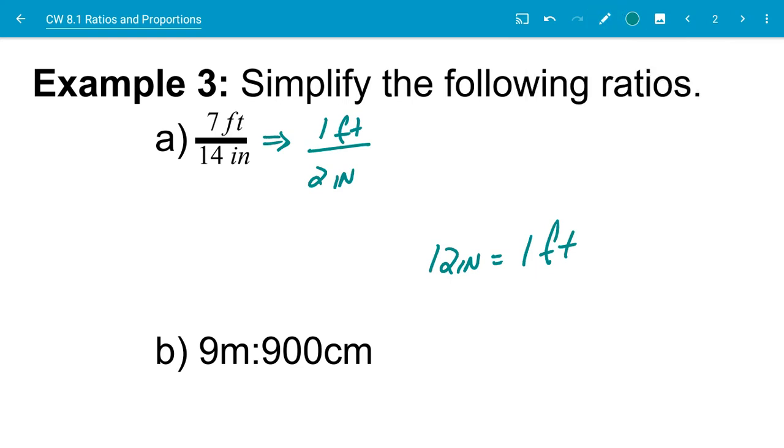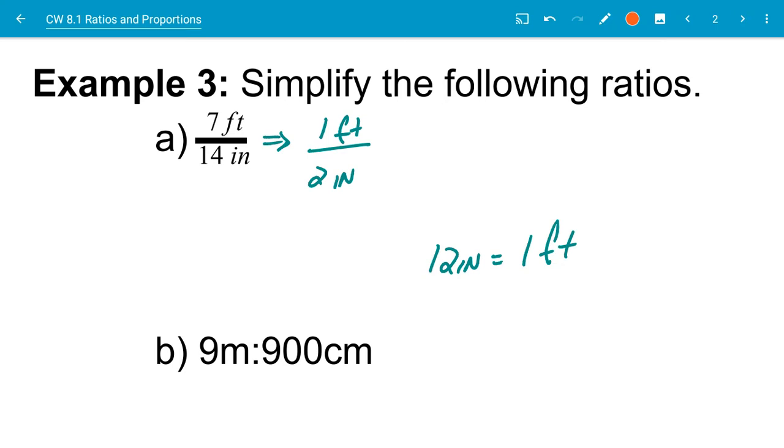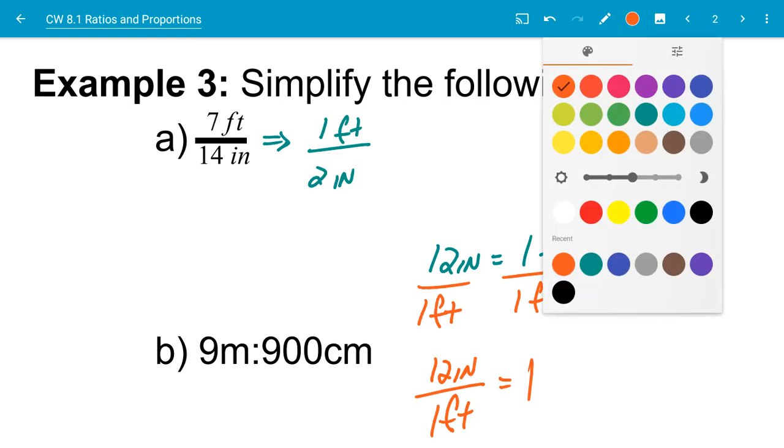If I know that 12 inches is equal to one foot, that's a true statement there. But one thing that I can do with this is I can write what are called conversion factors, or they're just basically ratios. Now watch what I do. If I divide one side by one foot, what I do to one side, I have to do to the other side. So I have 12 inches over one foot is equal to one. So you realize that when we multiply anything, any number by one, it doesn't change its value. It doesn't change the value. All that it does is it changes the units that it is in.